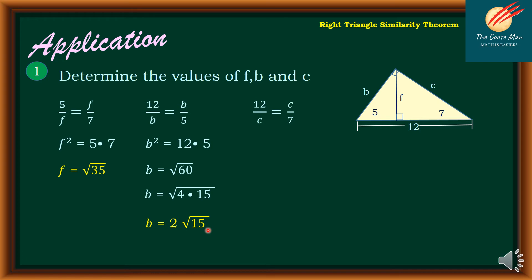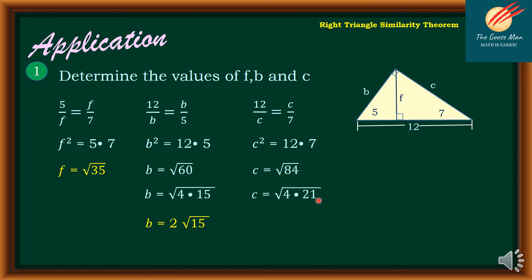To find the value of C, C is the geometric mean between 12 and 7. So C squared equals 12 times 7, which equals 84. Taking the square root of both sides, C equals the square root of 84. Since 84 can be factored as 4 times 21, and the square root of 4 is 2, therefore C equals 2 square root of 21.